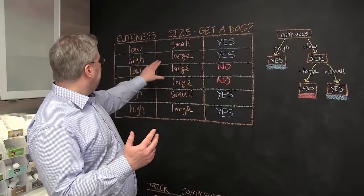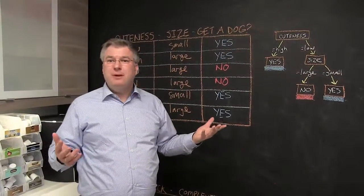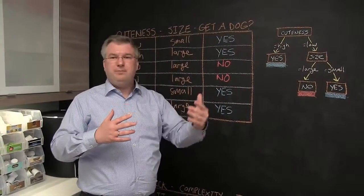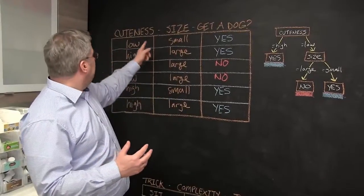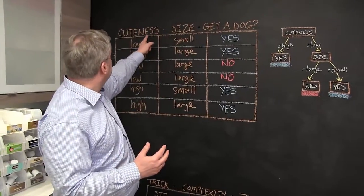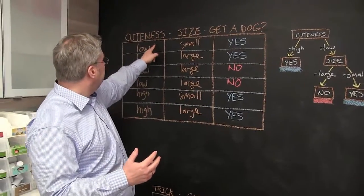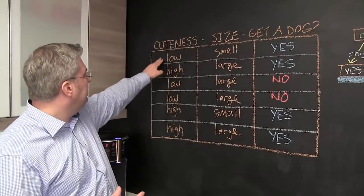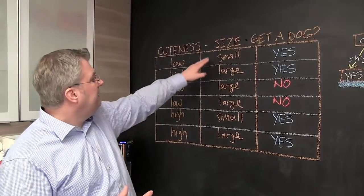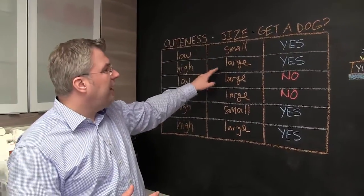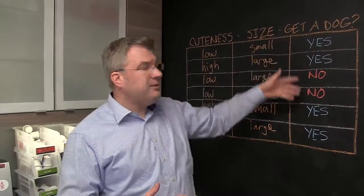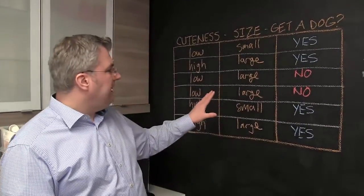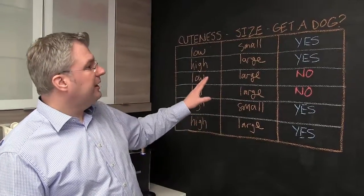We have a data set here about getting a dog. So people might make a decision: do I pick this dog or not? And we collected this information. This is about cuteness — so we have a column here about cuteness. Cuteness might be low or high. We have the size of the dog, small or large.